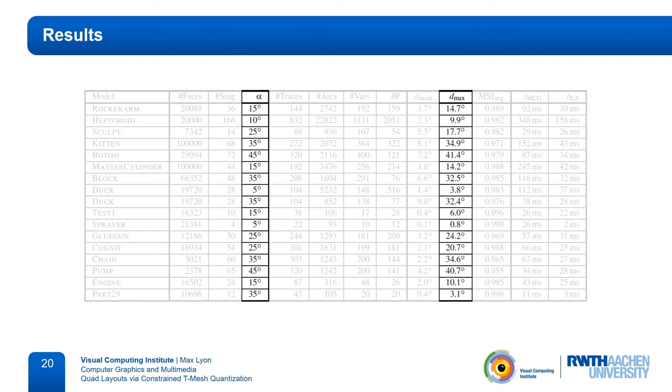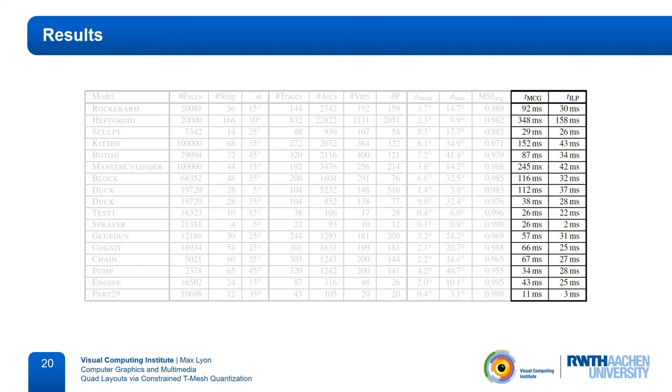Here are some statistics on these results. This is too much to go through completely, so let me just point out a few things. First, our experiments show that the angular bound is indeed adhered to. The left column shows the chosen parameter alpha, and the right shows the maximum deviation of a separatrix. However, while the maximum deviation is often close to the bound, the average deviation typically stays a lot lower. The other thing I quickly want to point out is that our method is quite fast. Construction of the t-mesh and solving the integer linear program takes less than half a second on a typical model.